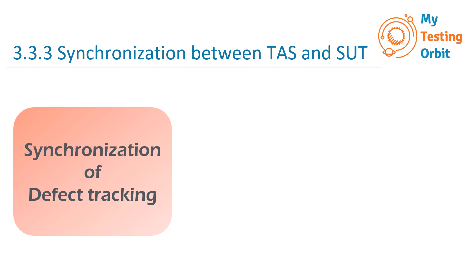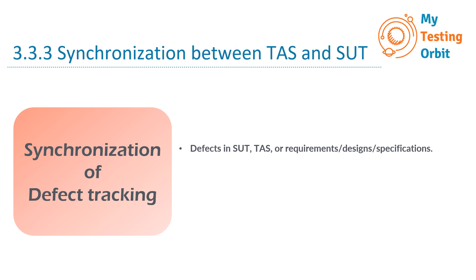The next topic is synchronization of defect tracking. Defects can exist in the SUT — the software we are testing — in the TAS, the tool we use for testing, or they can relate to the requirements, designs, or specifications that guide our project. These are the different types of defects we might encounter.